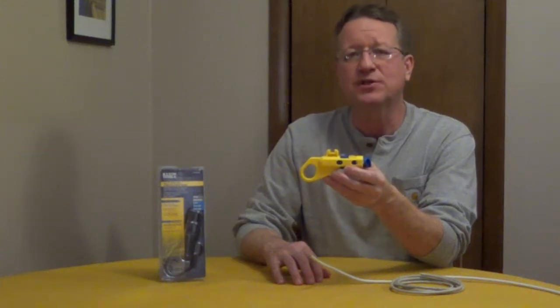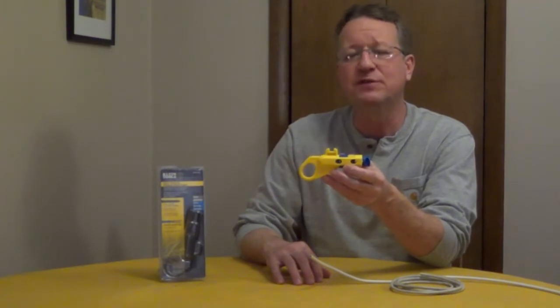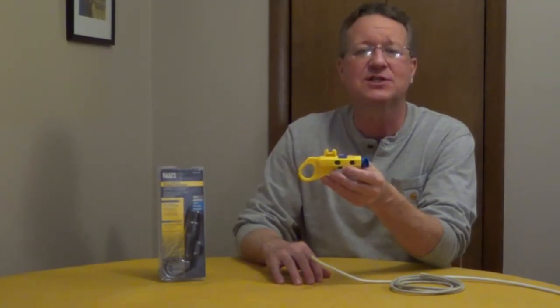The Klein Tools combination strippers are going to strip coax cable and Ethernet cable and this will do RG-59, RG-6 and 6 quad, CAT-3, CAT-5 and 5E, CAT-6 and 6A.